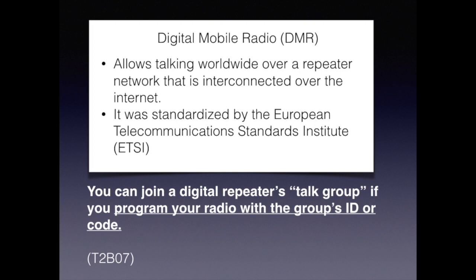Digital mobile radio, or DMR, is relatively new. It allows talking worldwide over a repeater network interconnected via the Internet. It was standardized by the European Telecommunications Standards Institute, or ETSI. It introduces a new concept called talk groups. The question reads: you can join a digital repeater's talk group if you program your radio with the group's ID or code.